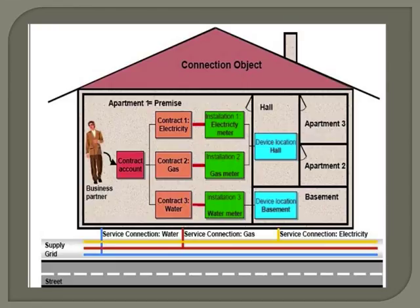We integrate business master data and technical master data through a specific technical object called utility installation. The utility installation is created for a particular contract partner and is division specific. In the utility contract, we integrate the contract partner, contract account, the contract itself, and also the connection object, device location, etc. Technical data together with master data enables meter reading for the consumer and subsequently billing and invoicing.